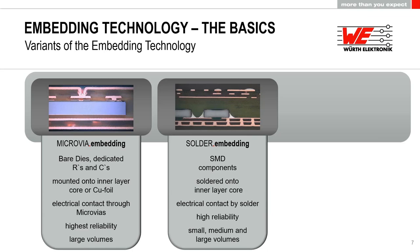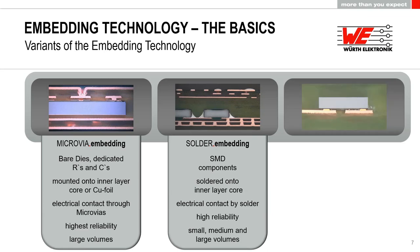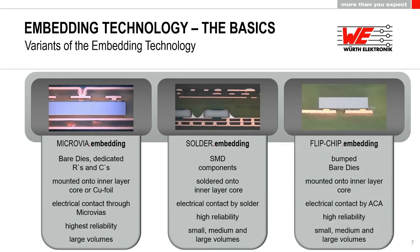One drawback of microwire embedding is that it is better suited to large volumes due to the need for dedicated component surfaces, making low-volume sourcing more difficult. The third technology is flip chip embedding, which uses only bare dies mounted using an ACA (anisotropic conductive adhesive) in a flip chip process. High reliability is achievable, and it is available in small, medium, and large volumes.